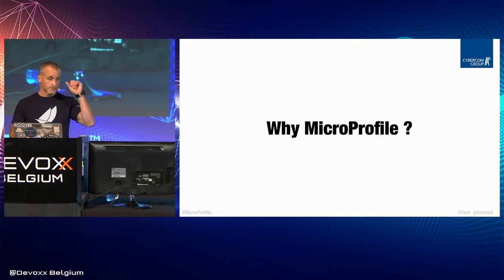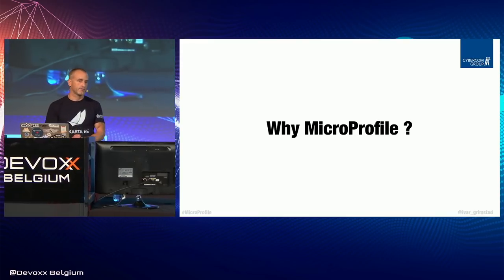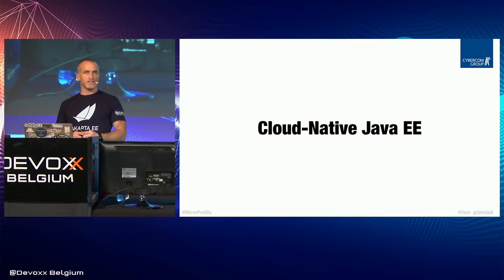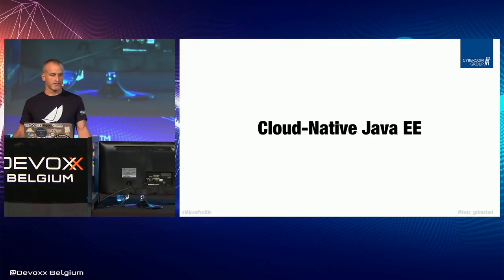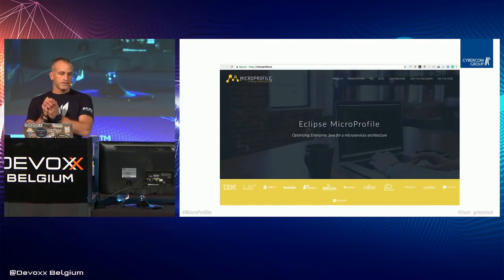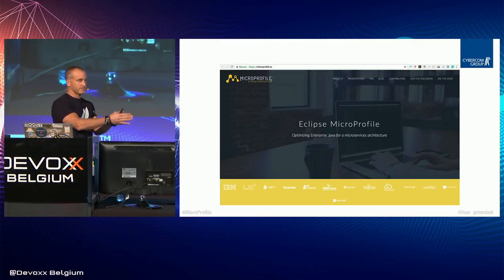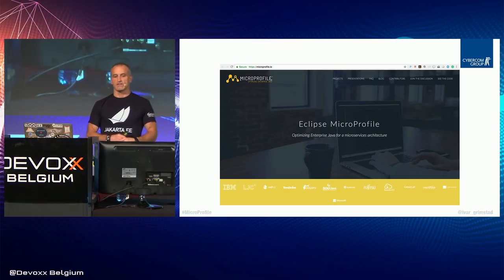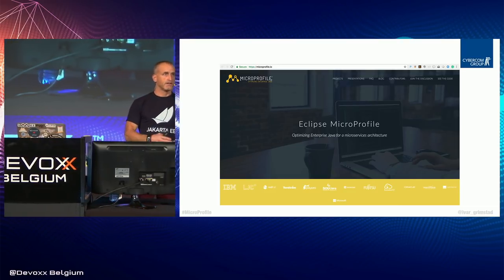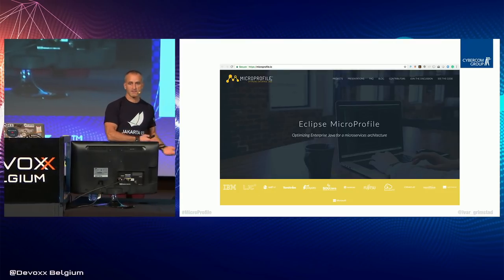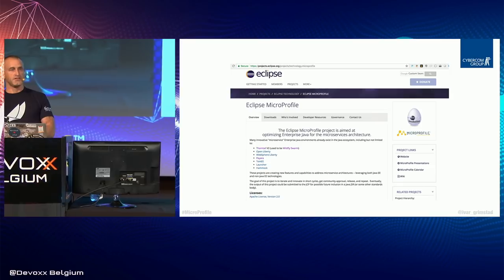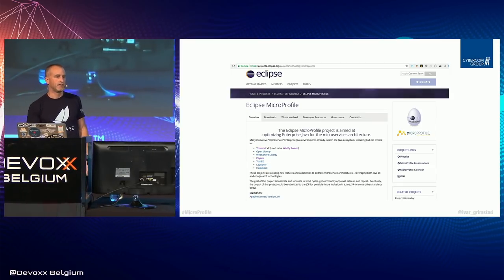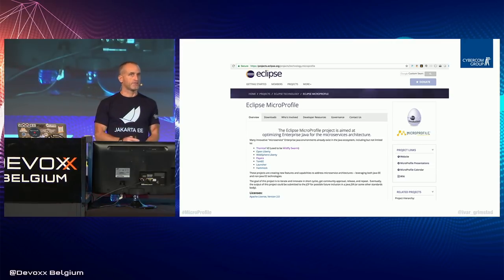Kevin touched on why MicroProfile. We all know what happened with Java EE 8 and why MicroProfile got started. There is a need for cloud-native Java EE and there is interest for it — just look at all the vendors involved in Jakarta EE. The place to get started with Eclipse MicroProfile is microprofile.io — just go in there and click around. You can see the code, the specifications, the samples, all the projects. You can get involved by joining the email list and just start discussing. It's a very open community — everybody is welcome.